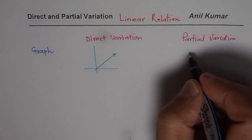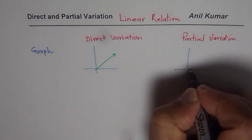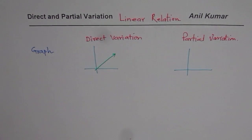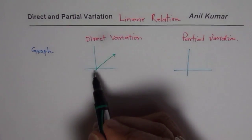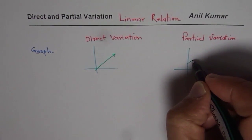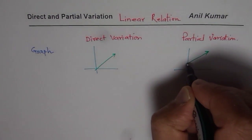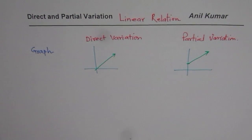Whereas, for a partial variation, the straight line will be not going through the origin. So it could be from here or somewhere else. So that is partial. So that is how you can figure out if the given graph represents a direct variation or not.